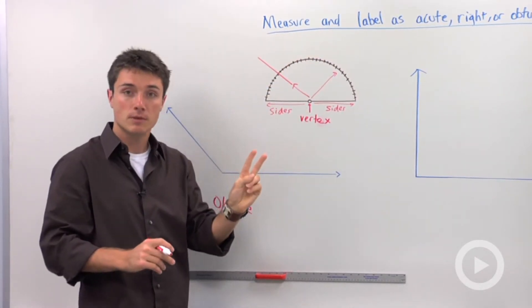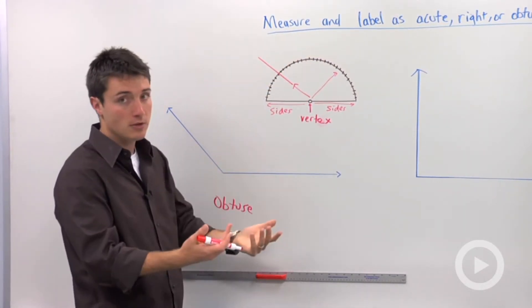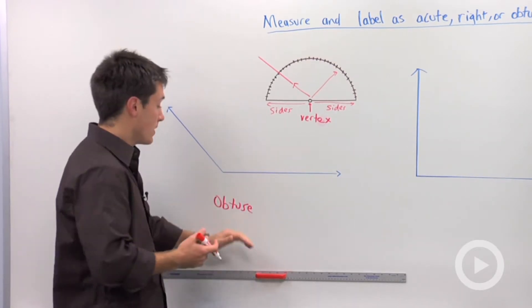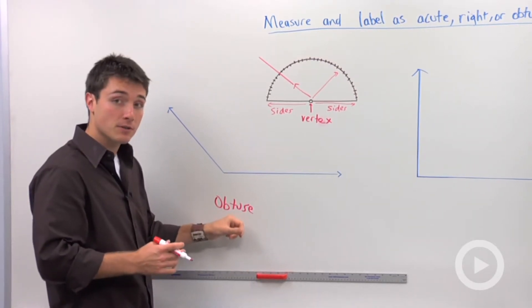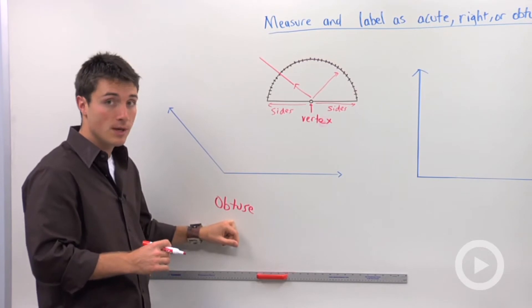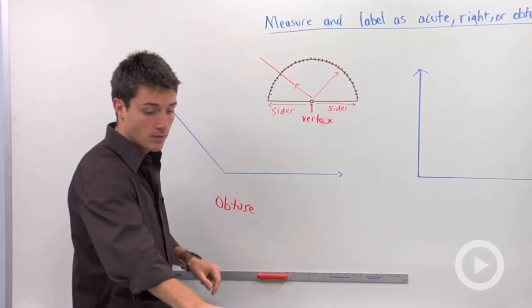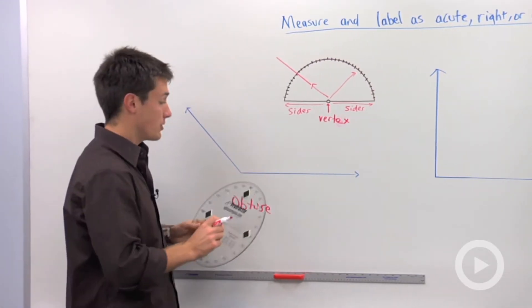One's going to be larger than 90, one's going to be smaller than 90. So when I use my protractor to measure this, because I know this is obtuse, I'm going to take the larger number. So I'm going to grab my protractor.